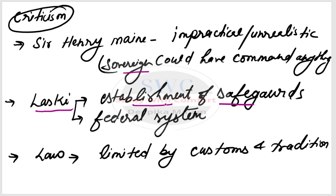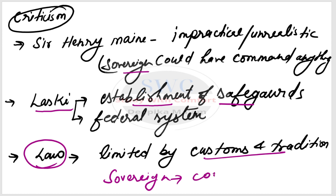Such safeguards are needed because if the sovereign or supreme authority can misuse its power against people, there must be protections for the liberty and rights of the people. Laski also says that when the federal system emerged — which is based on sharing and division of power — the monistic theory simply does not apply. Additionally, law is also limited by customs and traditions, not only by the commands of the sovereign.